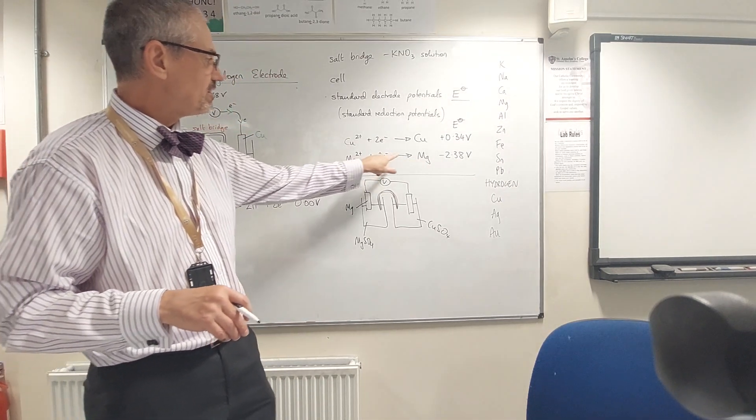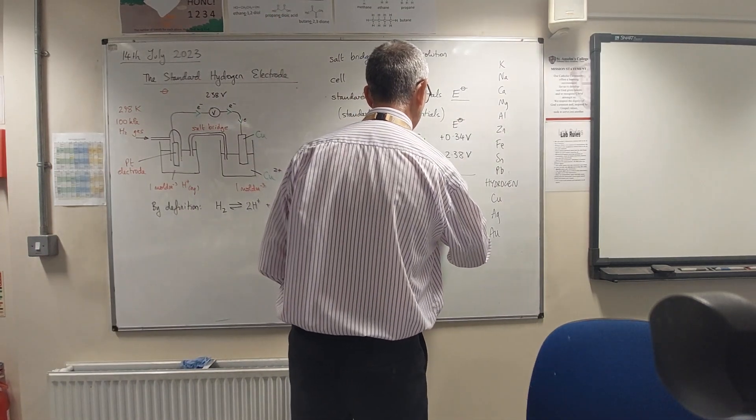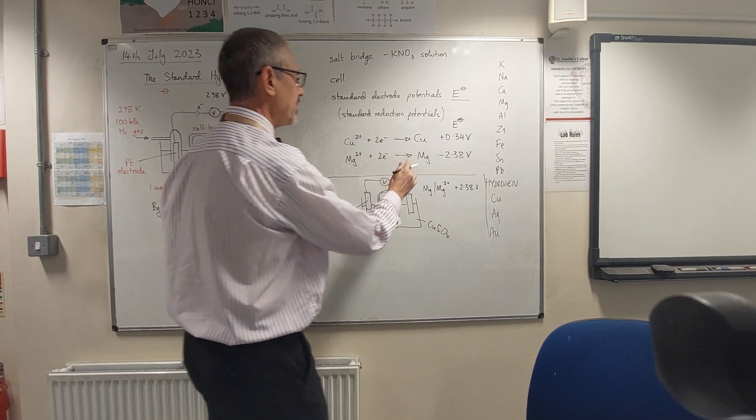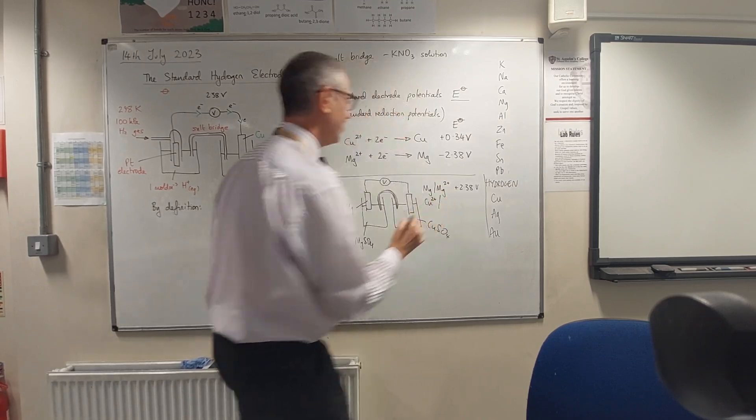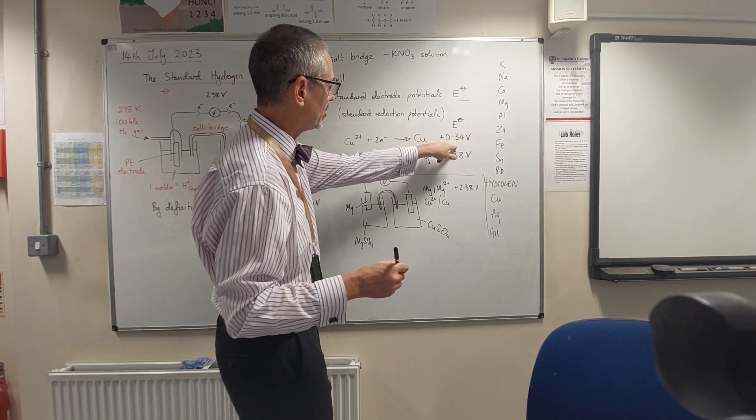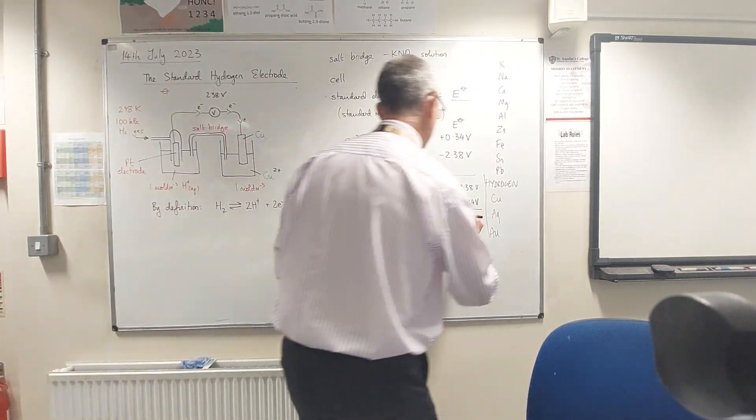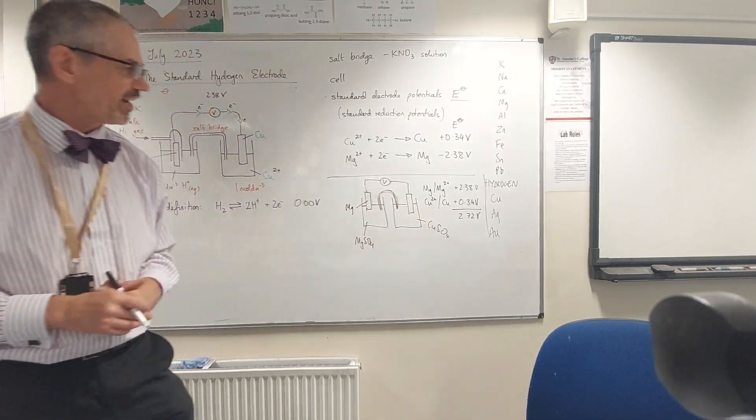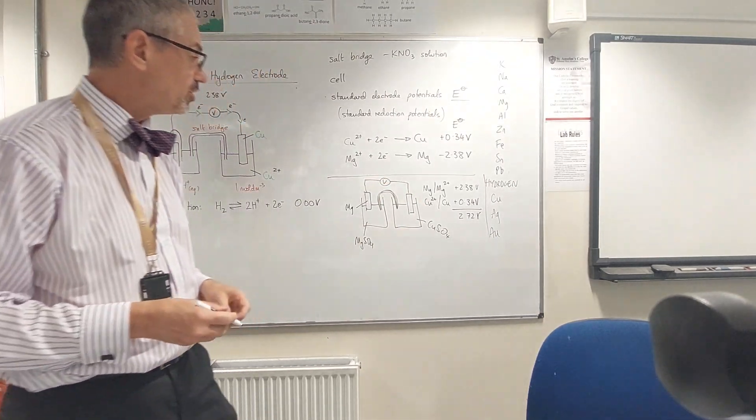So the magnesium is going to react and form magnesium ions. That's going in the opposite direction to that arrow, so I change the sign. Just like delta H, go the opposite direction to the arrow, I've changed the sign. So magnesium is going to form magnesium 2+ and that would give me 2.38 volts. Meanwhile, the copper 2+ ions would form copper. That's going in the same direction as that reaction, so I just use that value as it is, and they add together to make 2.72 volts. So in theory, if I connected a magnesium electrode to a copper electrode or half-cell - these are often called half-cells - that would give me quite a spicy little voltage: 2.72 volts.